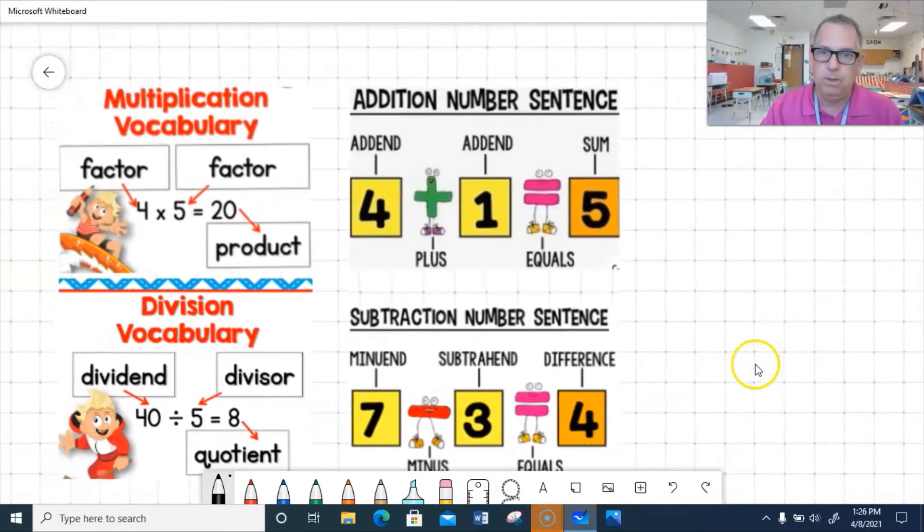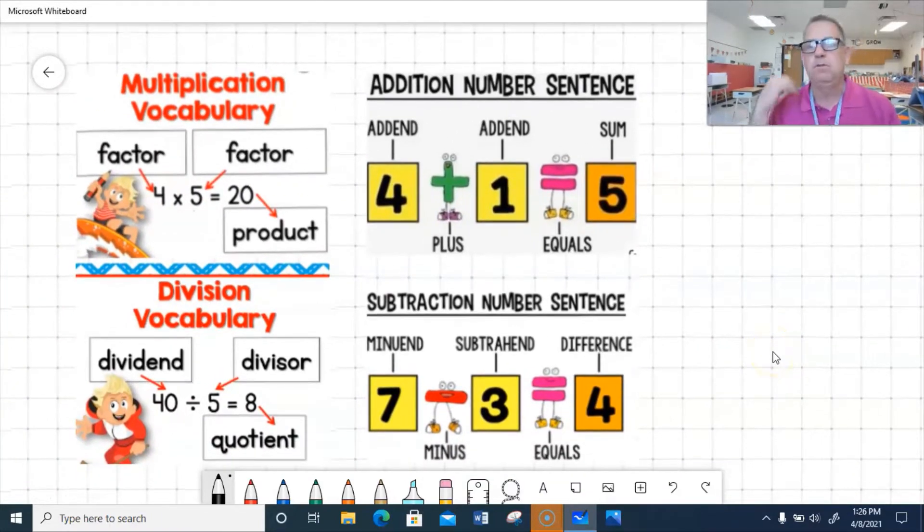Okay, look at some of the vocabulary real quick. With input-output tables, we're going to use all four operations. So basically when we're looking for the rule, it could either be an addition rule, a subtraction rule, a multiplication rule, or a division rule.